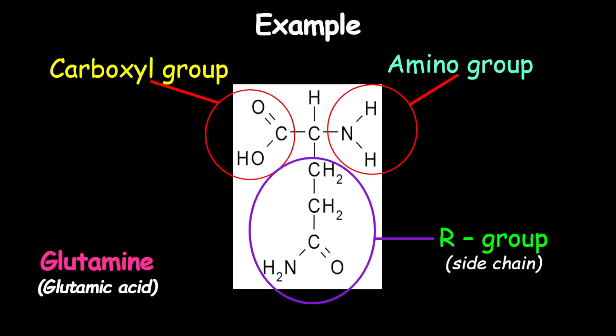Now we have the three groups identified. Note — this is for a future lesson — but if you notice in the R group here, we have NH2, which is an amine group, and that is why this amino acid is called glutamine. The amine part comes from the amino group within the R group. We'll talk about that in the future when categorizing amino acids.